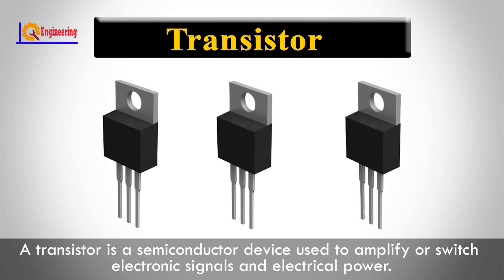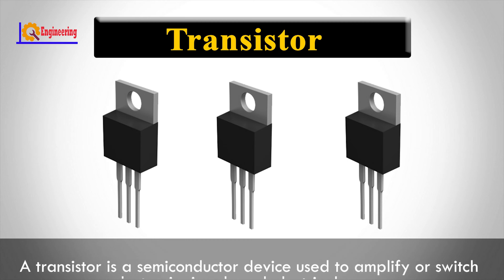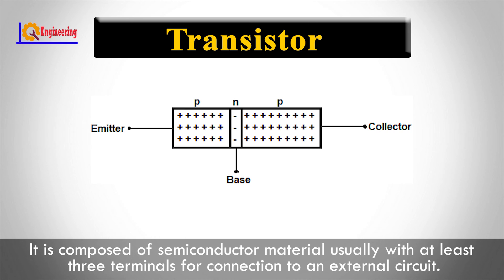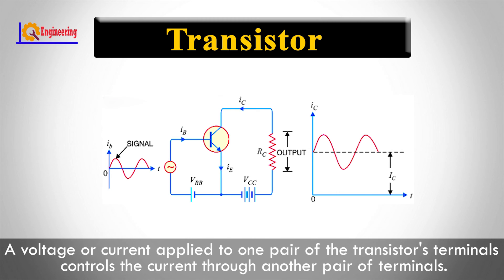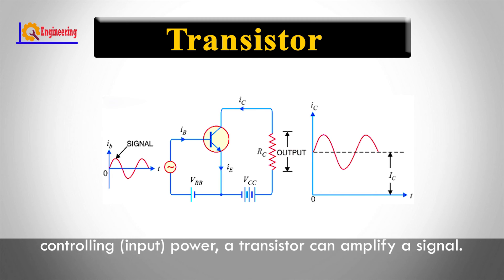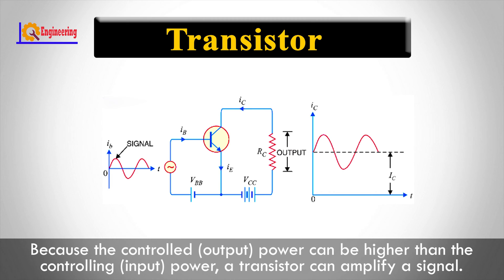A transistor is a semiconductor device used to amplify or switch electronic signals and electrical power. It is composed of semiconductor material, usually with at least three terminals for connection to an external circuit. A voltage or current applied to one pair of the transistor's terminals controls the current through another pair of terminals. Because the controlled output power can be higher than the controlling input power, a transistor can amplify a signal.